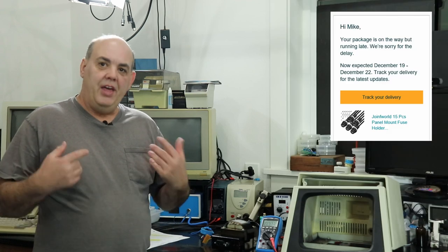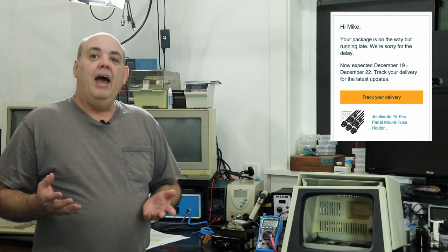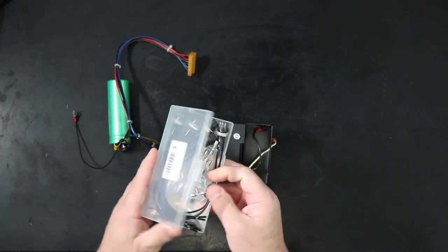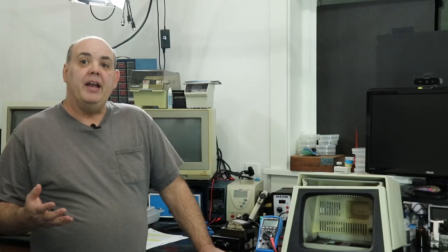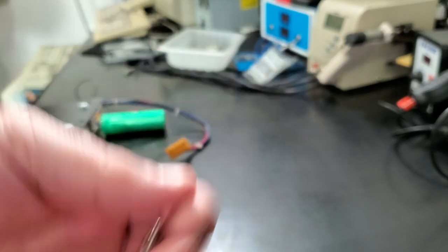So they ended up getting shipped late, then the shipment was delayed, and then because the shipment was delayed they got cut up in the Christmas blizzard back east. So they finally arrived a couple days after Christmas, and they do fit, however it looks like they take 20mm fuses instead of the standard 30mm fuses that the PET uses. They'll work, but I'd rather have something more original.